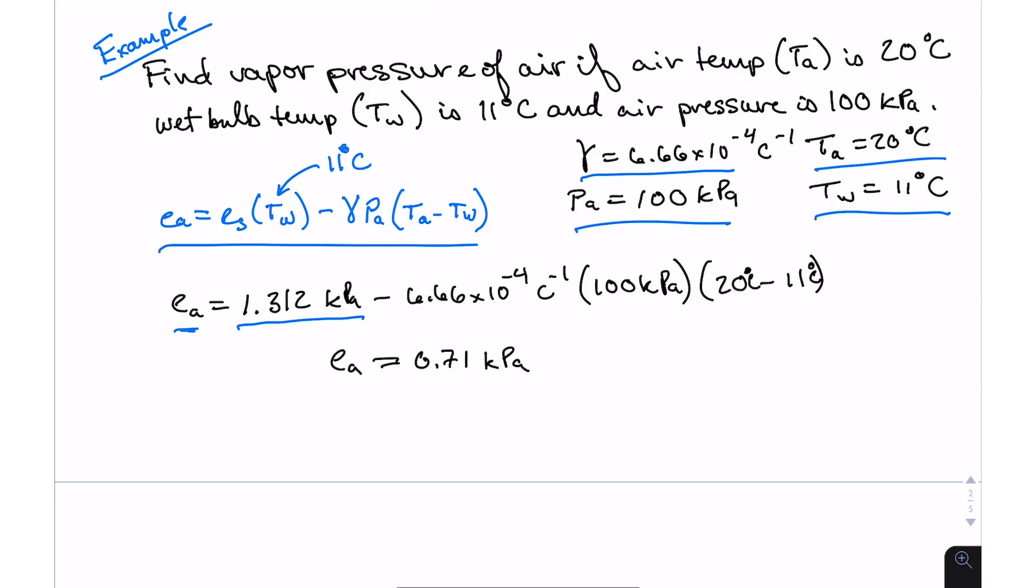Our vapor pressure is going to be this calculation that came from Tetens formula. Right here we inserted 11 degrees C. Then we subtract off 6.66 times 10 to the negative four, multiplied by 100 kilopascals, multiplied by the difference between the air temperature and wet bulb temperature. If you plug all those numbers into your calculator and notice here that our degrees C cancel and then we're just left with kilopascals, our vapor pressure is about 0.71 kilopascals. So that is how we calculate the vapor pressure from the wet bulb temperature.